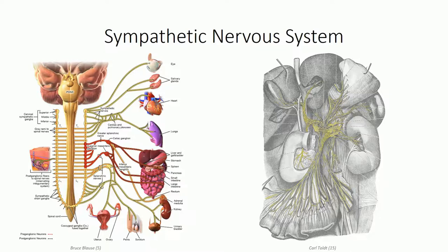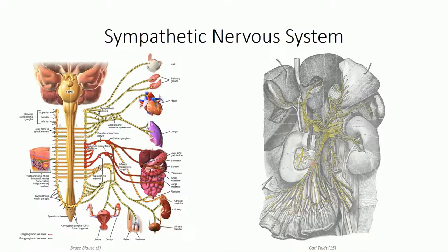The lesser splanchnic nerves primarily converge on ganglia surrounding the superior mesenteric artery. From here, a plexus of nerves is formed from postsynaptic sympathetic fibers and presynaptic parasympathetic fibers of the vagus nerve, which courses along the branches of the superior mesenteric artery to bring both sympathetic and parasympathetic innervation to the midgut. In addition to the superior mesenteric ganglion, presynaptic fibers may also converge on the aorticorenal ganglion, with postganglionic fibers traveling to the kidneys and some of the upper pelvic organs.